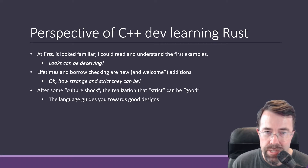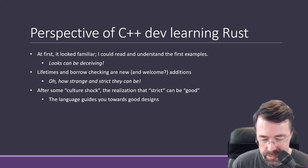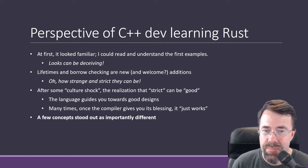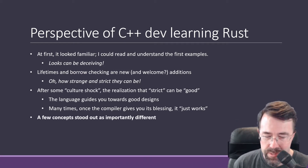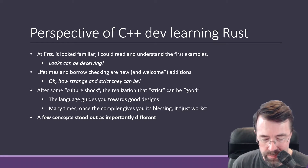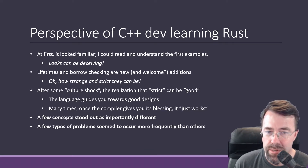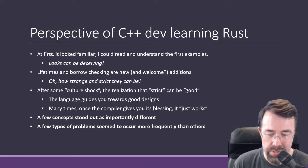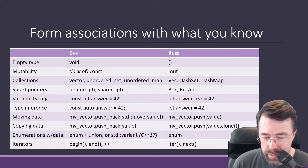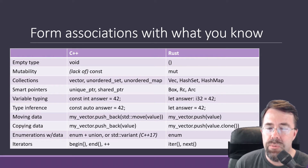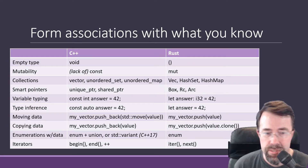The language does guide you towards better designs. Many times once the compiler gives you its blessing, it just works. So a few concepts in particular stood out to me as important and different from other languages, particularly C++, and I'd like to talk about them today. Also, a few types of problems that I ran into seem to occur more frequently than others. My initial approach to Rust was: let me form associations between what I already knew in C++ and what's in Rust.